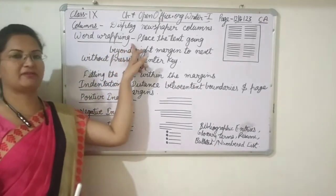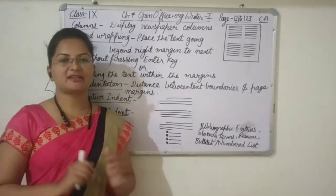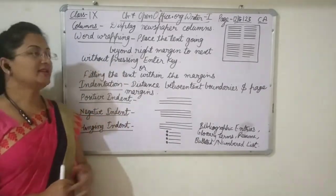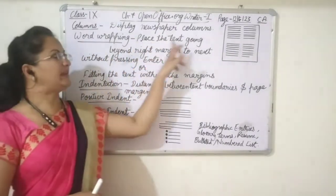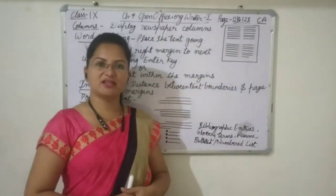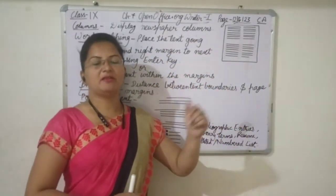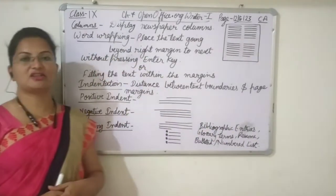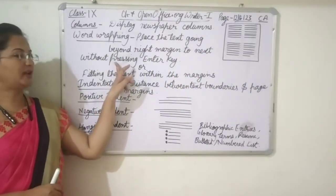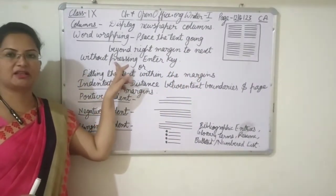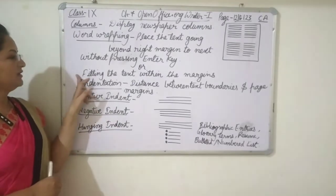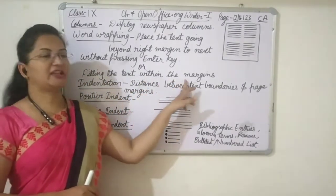Now, word wrapping. Word wrapping means the text will be automatically arranged between the left margin and the right margin. Word wrapping means placing the text so that it does not go beyond the right margin. If the text reaches the right margin, without going beyond it, the text will automatically shift to the next line. We don't have to press Enter key — automatically the text will come to the next line. We can also say it is fitting the text within the margins.